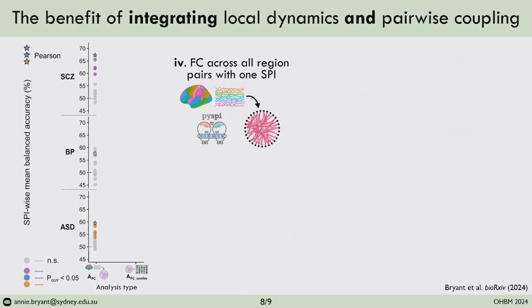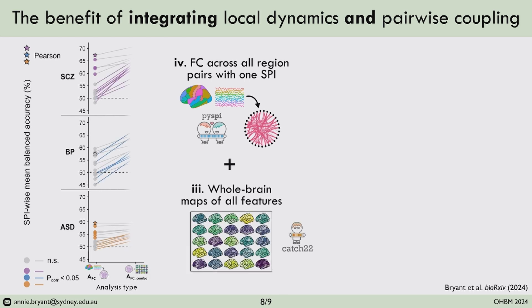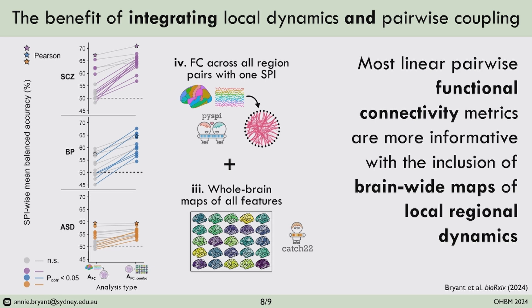We found that several measurements of functional connectivity could significantly distinguish cases from controls for schizophrenia, bipolar disorder, and autism spectrum disorder, including the Pearson correlation coefficient. Moreover, we found that across statistics for pairwise interactions, performance was further boosted when we also included whole-brain maps of intra-regional dynamics, which is notable given the considerable increase in dimensionality to the classifier. We're excited about the prospect for enhanced insights from functional neuroimaging data that can be gleaned from systematically combining both intra-regional dynamics and pairwise coupling going forward.